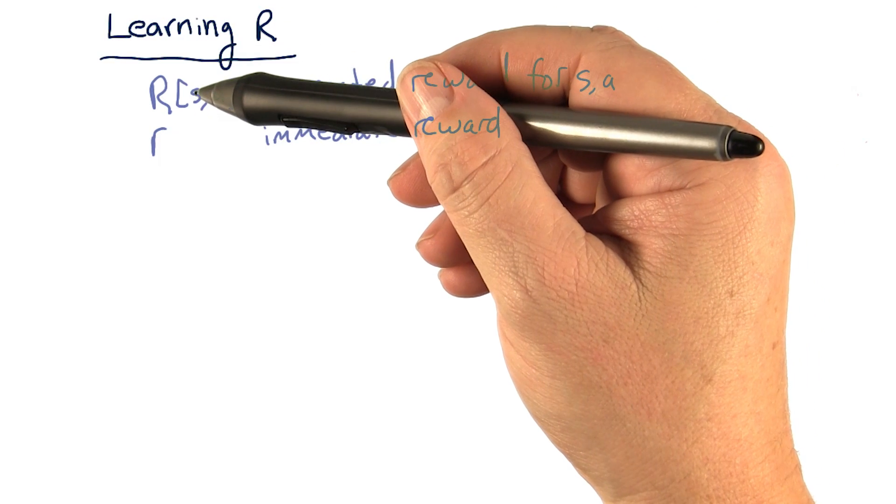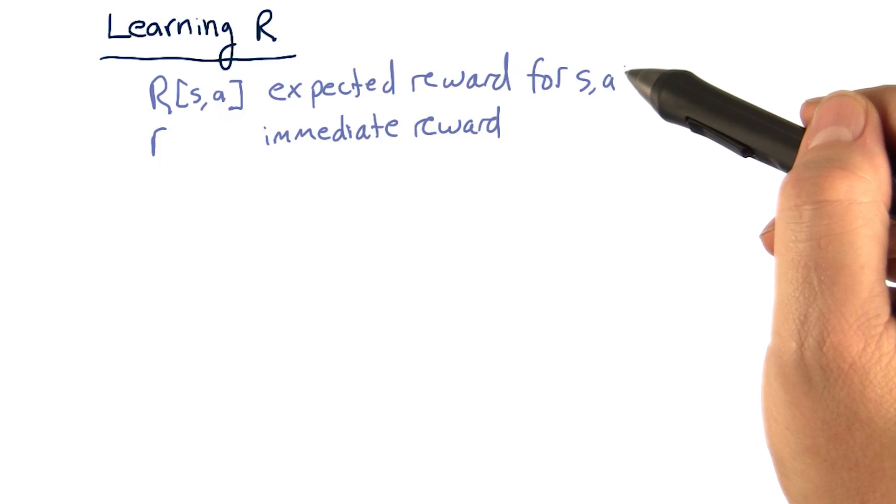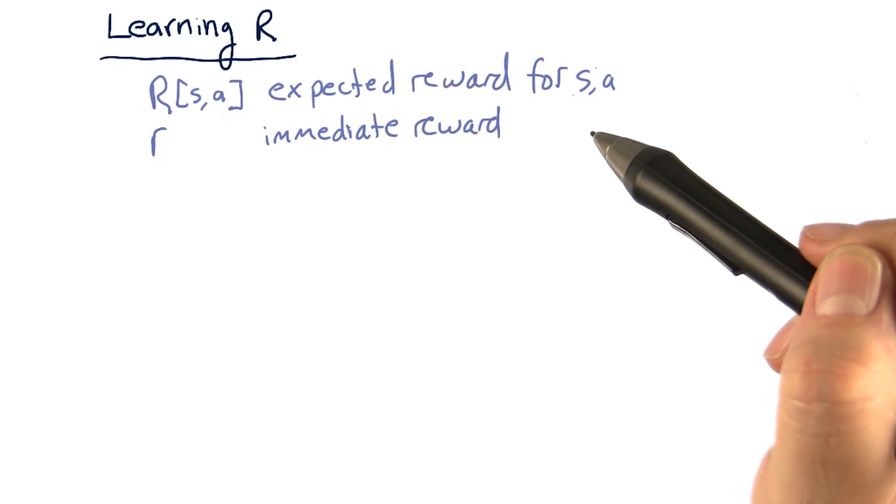So again, big R[s,a] is our expected reward if we're in state S and we execute action A.